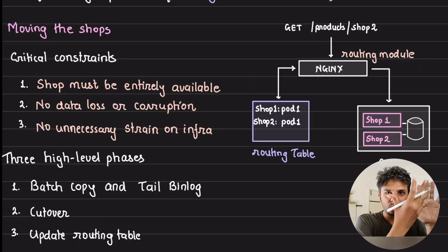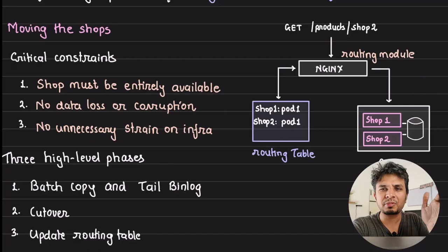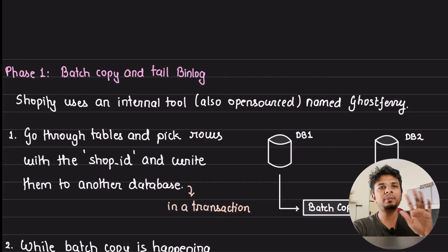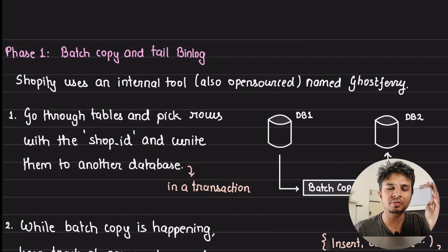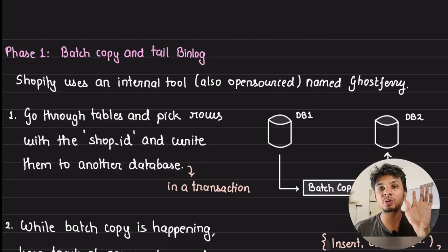The overall movement can be broken into three phases: first, batch copy and tailing the binlog; second, preparing for a cutover; and third, updating the routing table. Shopify has built an open-source tool called GhostFerry, written in Go, for this purpose. All of this is documented on Shopify's engineering blog, linked in the description.